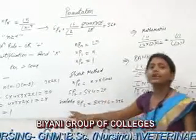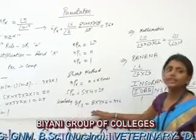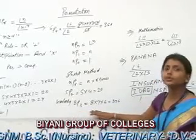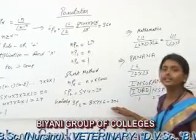Similarly, the value of 8P3 is equal to 8 into 7 into 6, which is equal to 336.